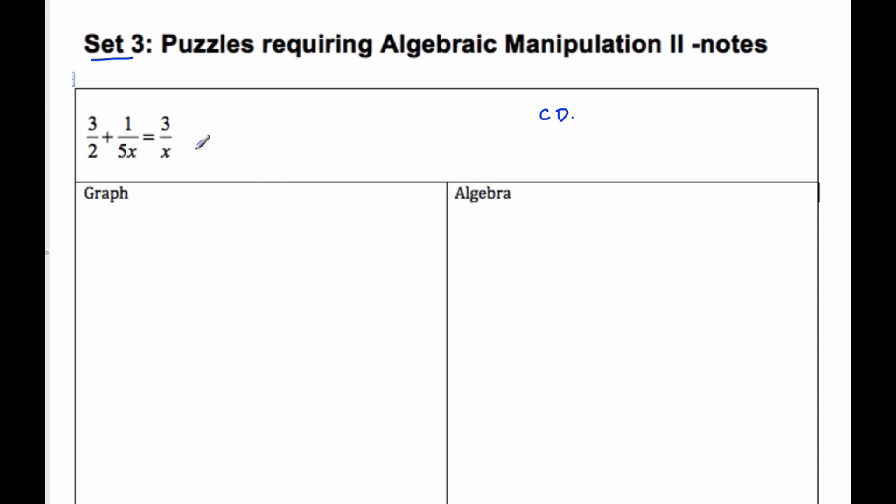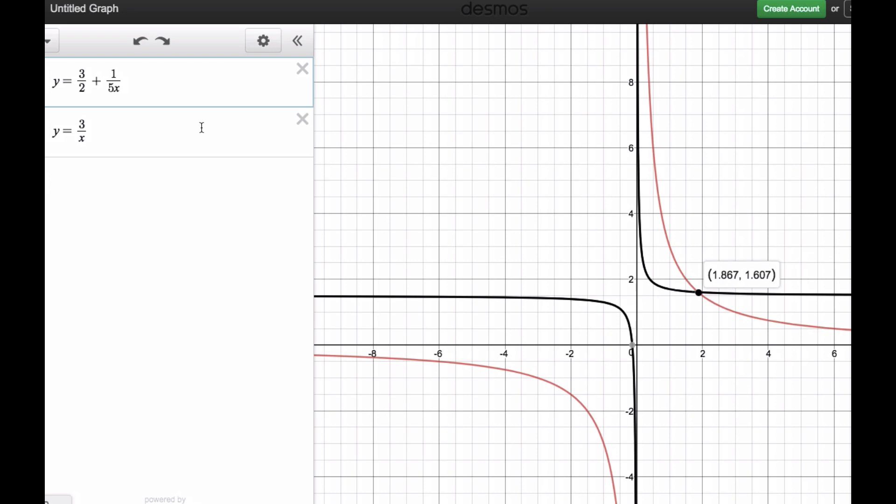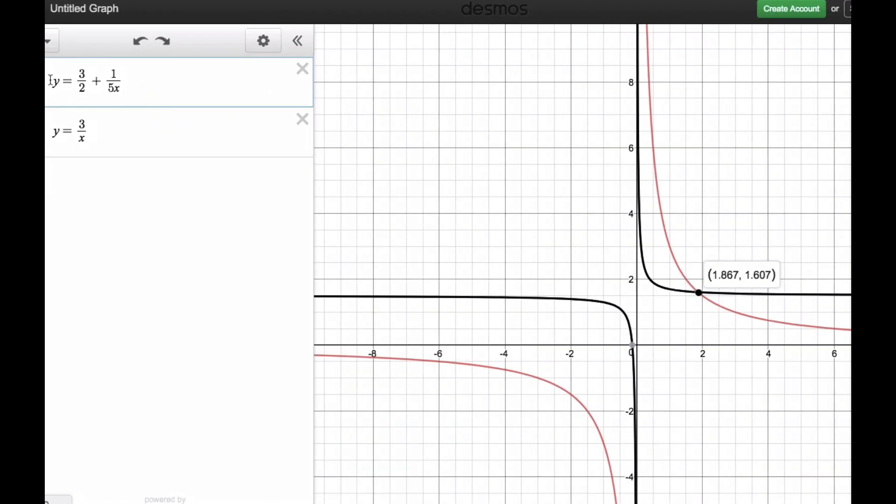But let's get a sense of what this graph looks like. So I'm going to go to Desmos here. I've already taken the liberty of the left side of the equation. This here, y equals 3/2 plus 1 over 5x.